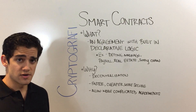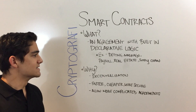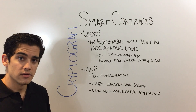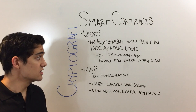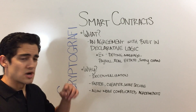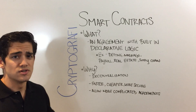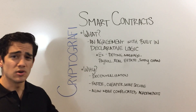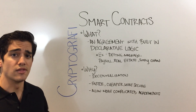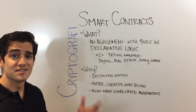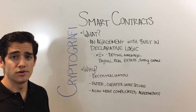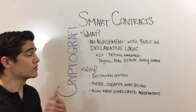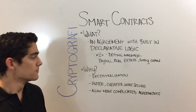The big thing with smart contracts is that they take the power away from the middlemen. Typically, if you want to go buy a home, you need to go through lawyers, notaries, and financiers — middlemen that really slow down the process. But with smart contracts, you can do that all on your own, as long as you can program or create and think of the logic yourself.